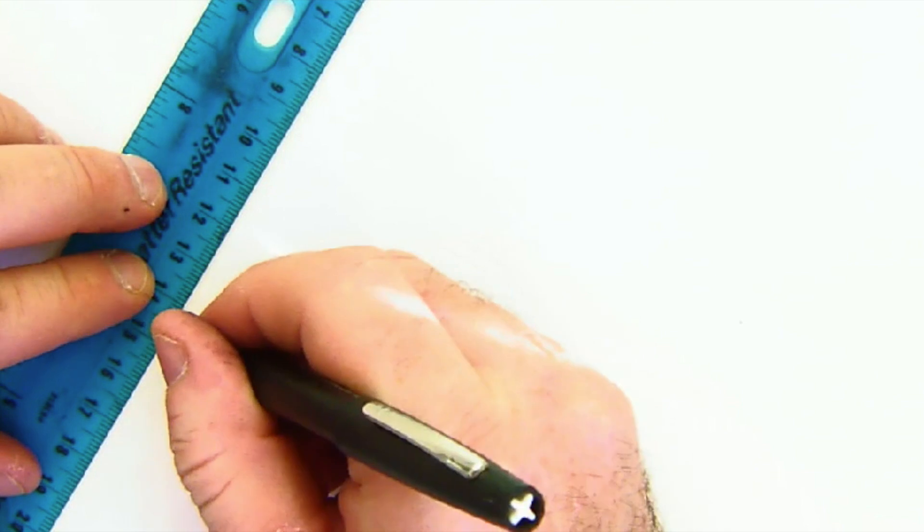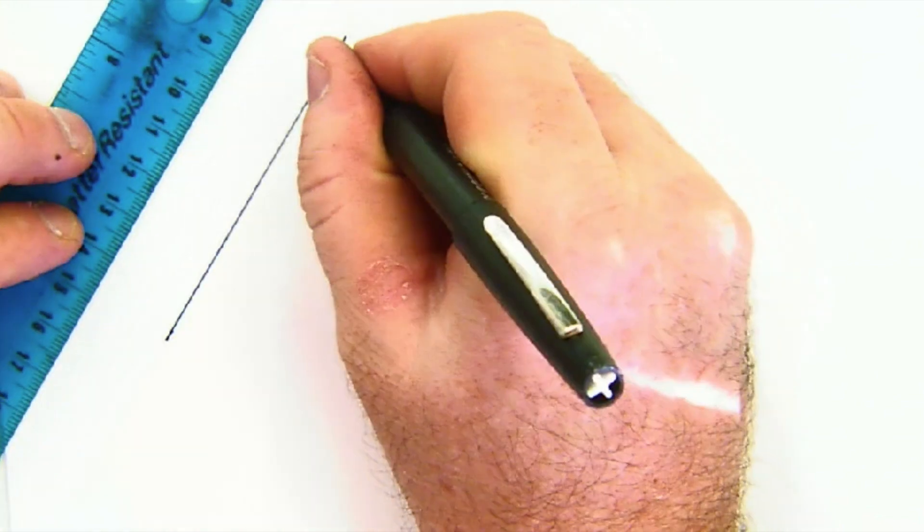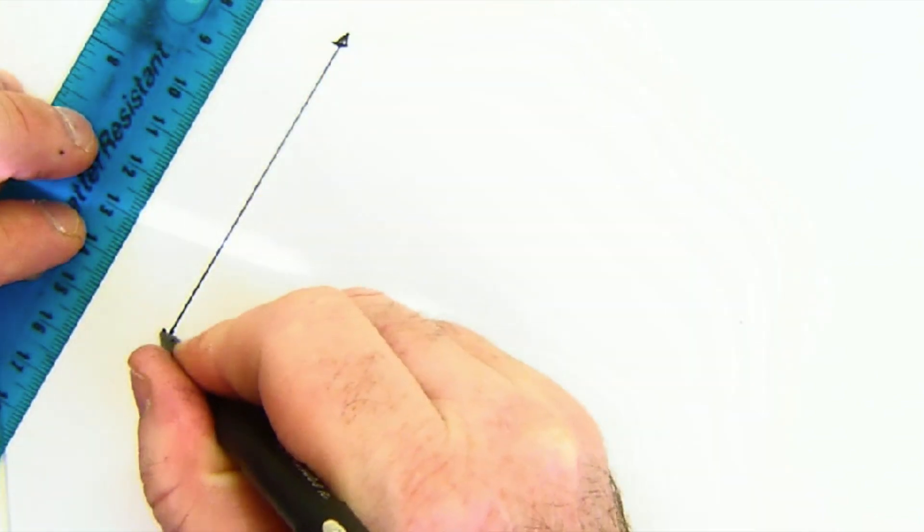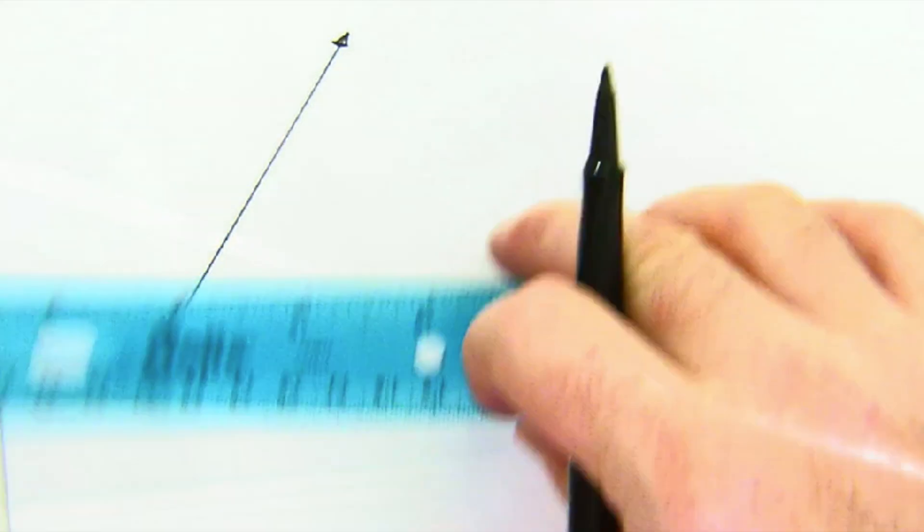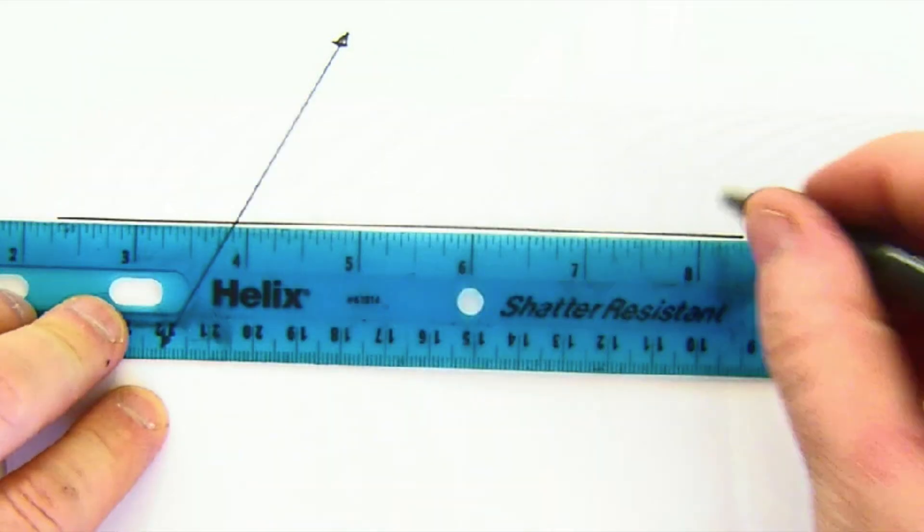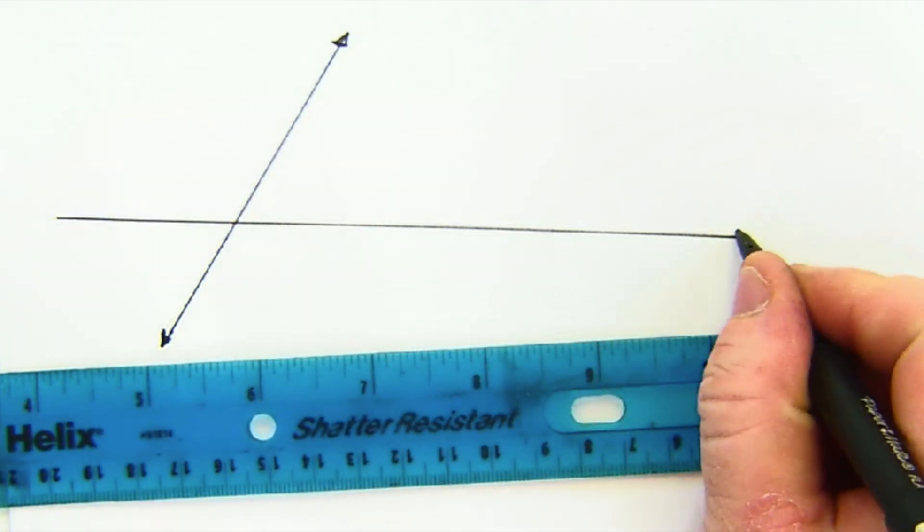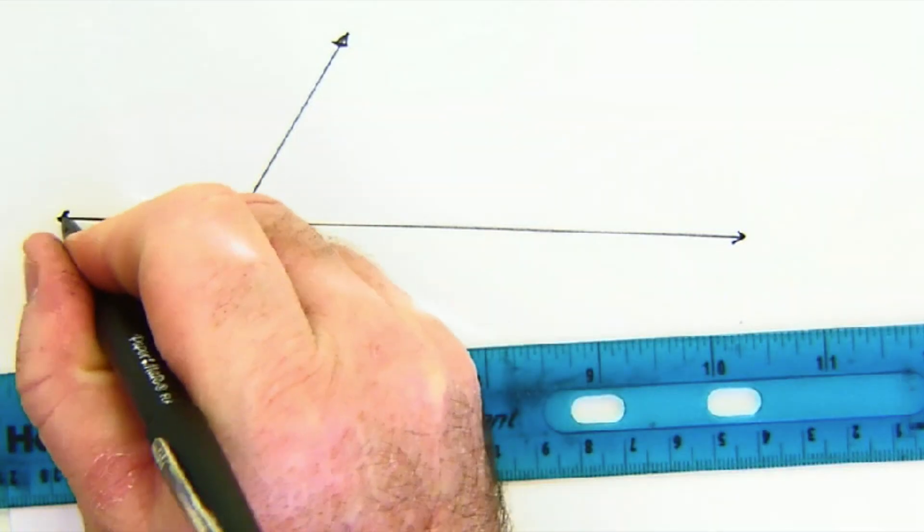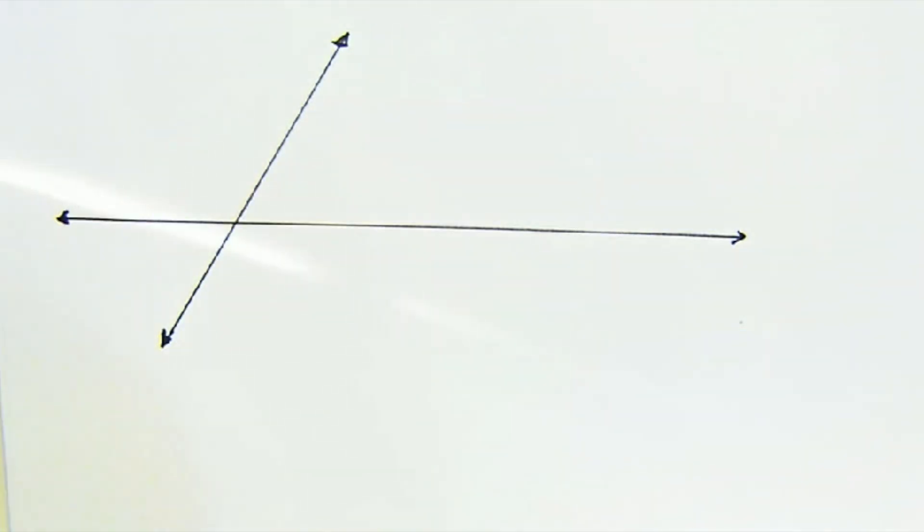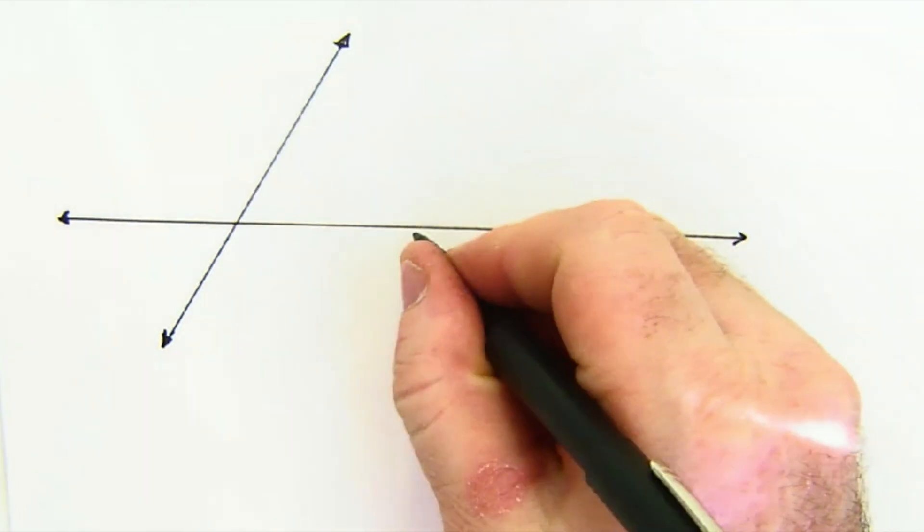All right, let's learn how to construct a parallel line. So let's create a line that we want to become parallel to, let's say this one. What you do is you create any line through it, so just create another line that goes through that line. Now let's say we wanted to be parallel to this one through this point right here.